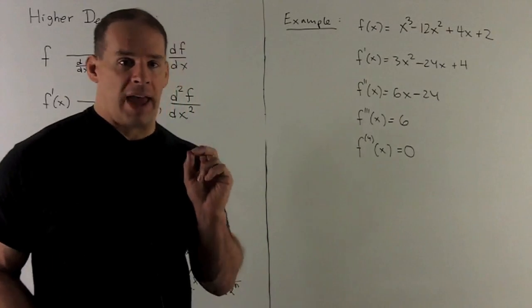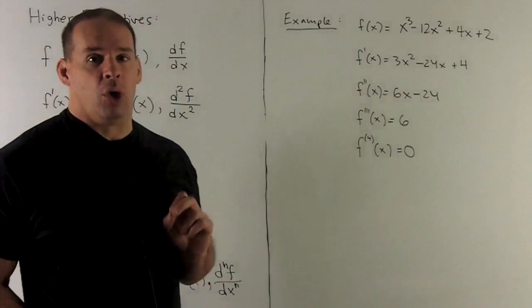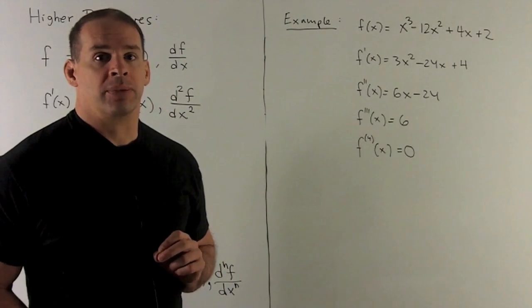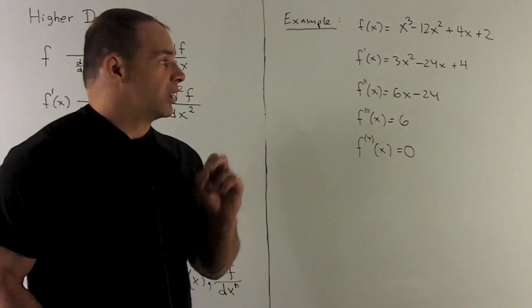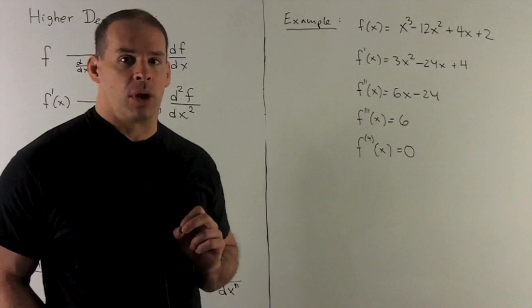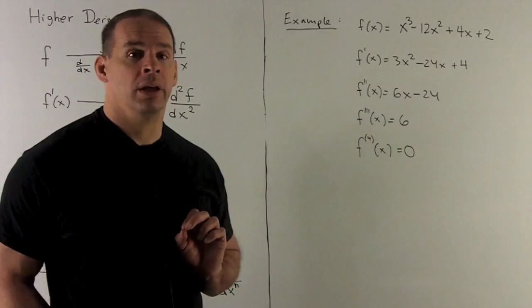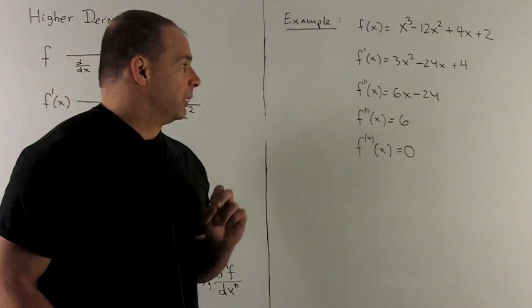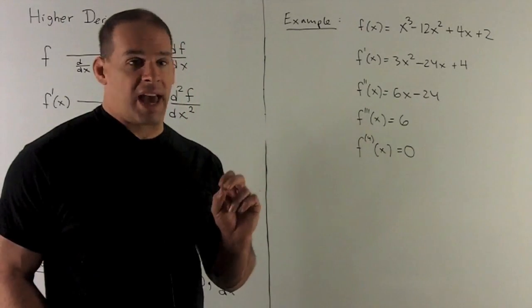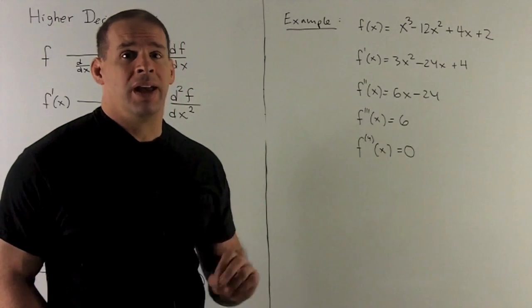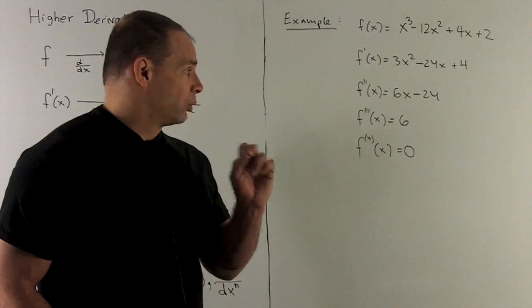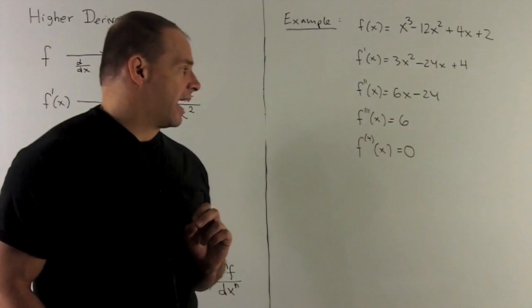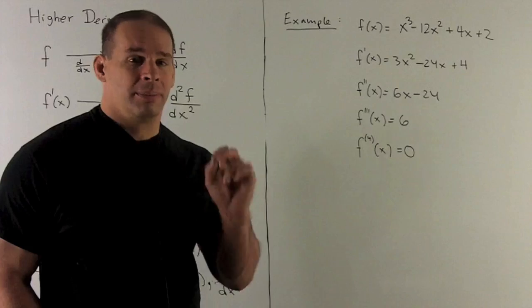I'm going to have my function polynomial x cubed minus 12x squared plus 4x plus 2. Take its derivative. That's going to give me 3x squared minus 24x plus 4. Do another derivative. That gives me the second derivative. That's going to be 6x minus 24. I do another derivative. We're going to call that f triple prime. That's going to be equal to 6. And then I have fourth derivative that goes to 0.